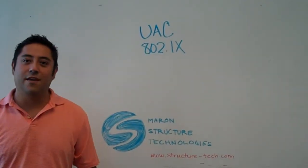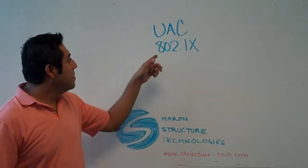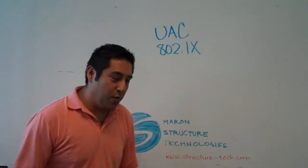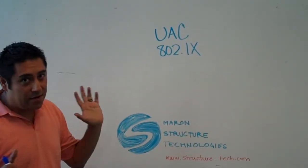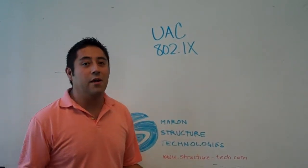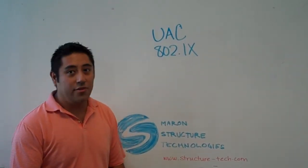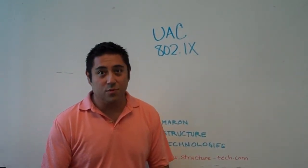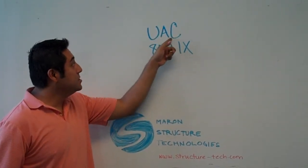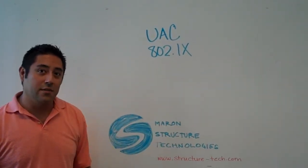What does UAC stand for? Unified Access Control, basically 802.1X. So for those that are not in the know, when you are trying to secure your environment, be it radius or authentication mechanisms within the environment, you should consider deploying UAC or a flavor of 802.1X.